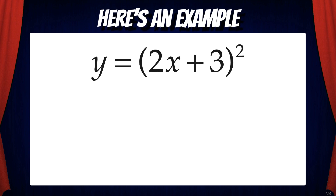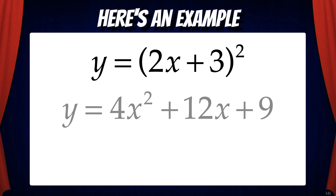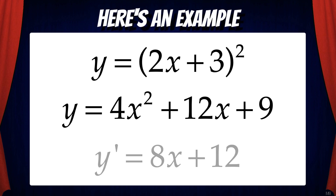Suppose y equals the quantity of 2x plus 3 squared. With our current knowledge, if we wanted to find the derivative of this, we would have to expand the algebra and then use the power rule. That would give us y prime equals 8x plus 12.